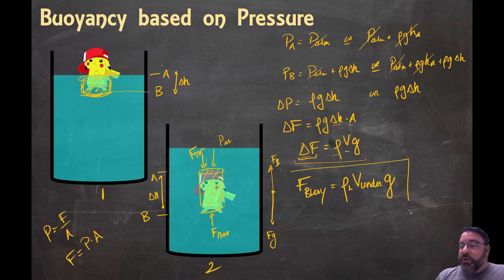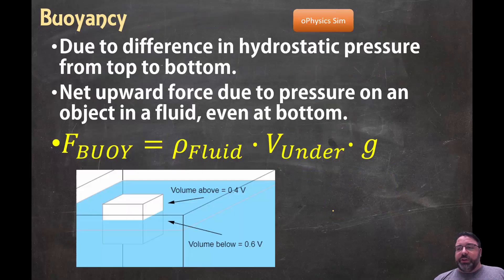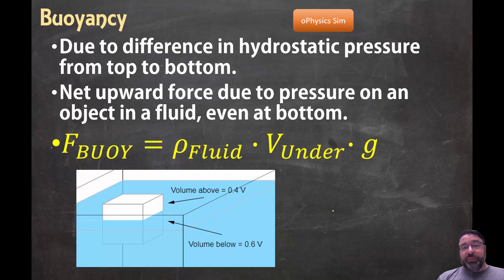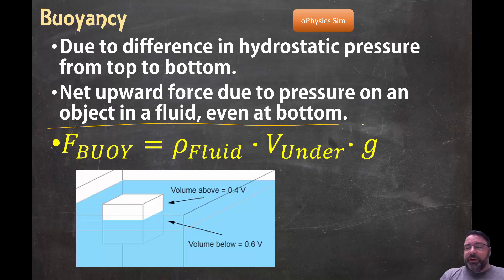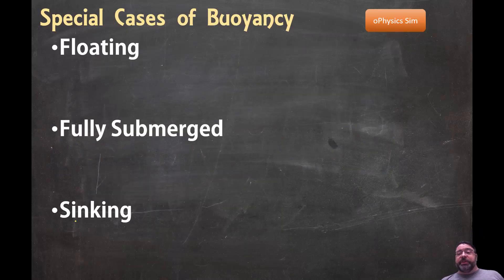And there's our equation for the buoyant force: it's always equal to the density of the liquid times the volume of the object actually submerged in the liquid times g. In summary, the buoyant force is due to a difference in hydrostatic pressure from the top to the bottom — it's a net upward force due to pressure on an object in a fluid. The volume below the surface is the volume underwater, and the rest is above.